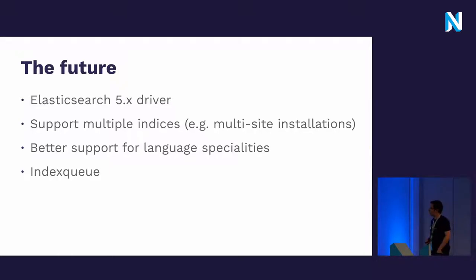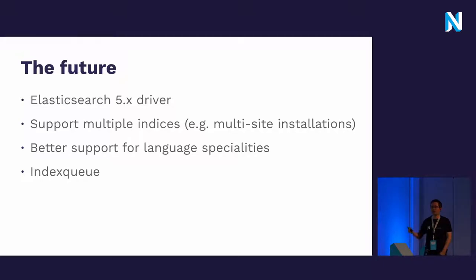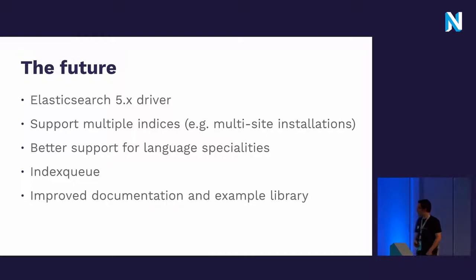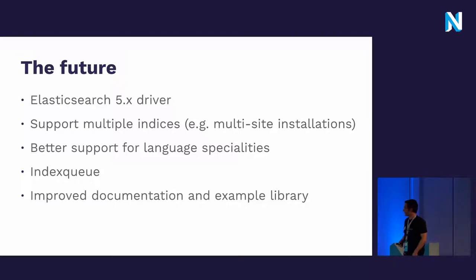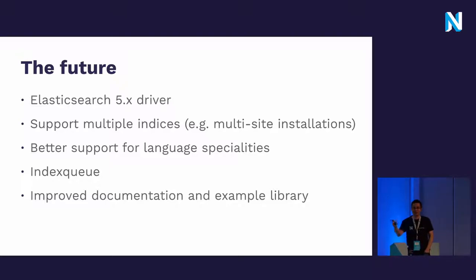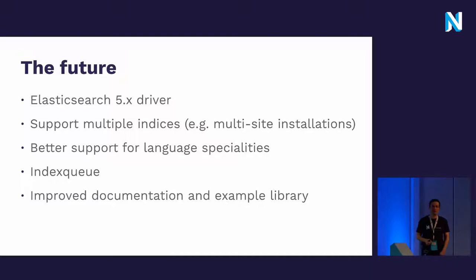We need some idea for an index queue — for real-time indexing, we need a solution that doesn't slow down content editing. And, as always, we need to improve the documentation and build an example library. Most of you raised your hand about Elasticsearch usage — if you want to help with that, just join us in the guild-search channel in Slack. We appreciate every pull request or good idea to improve things.